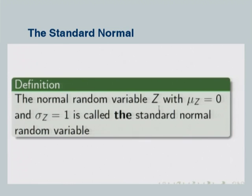The standard normal is a specific type of normal random variable. Instead of x, we use z, with mean equal to 0 and standard deviation equal to 1. Normal random variables can have any mean and any standard deviation, but the standard normal has mean 0 and sigma equal to 1.